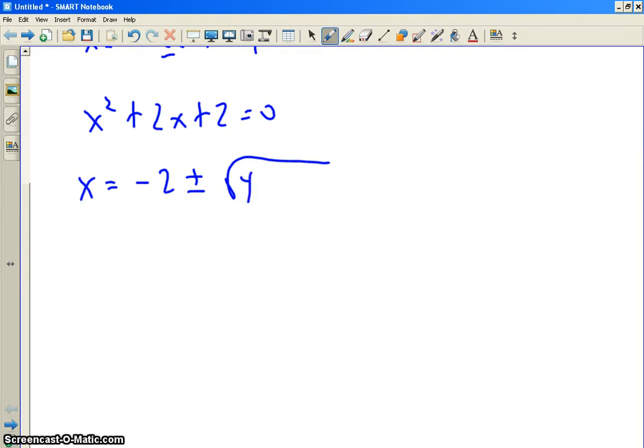which is 2 squared is 4, minus 4 times a, a is 1, times c, all over 2a. And a is 1. So what do you get?